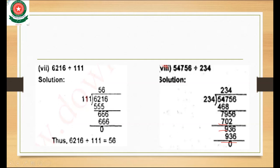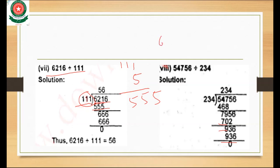Part 7: 16216 divided by 111. We place 16216 inside and 111 outside the division form. Since 111 has three digits, we take three digits: 162. We multiply 111 times 5 which gives 555. So we subtract 621 minus 555.